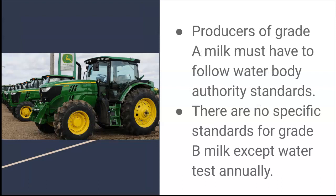There are many standards that milk has to be at, and one of them requires farm equipment. The standard that this milk is being treated at is quite different. Producers of grade A milk must follow water body authority standards, while there are no specific standards for grade B milk except for water tests annually.